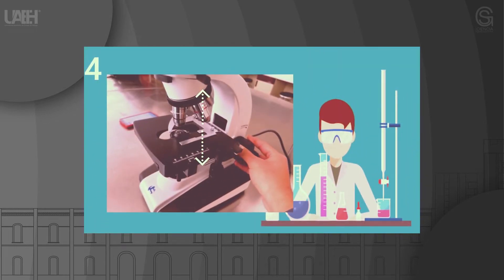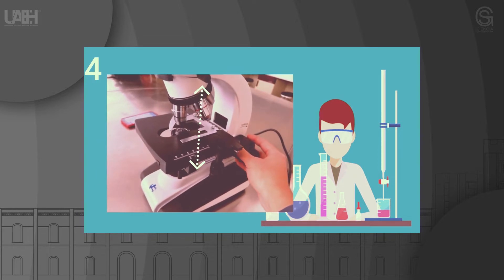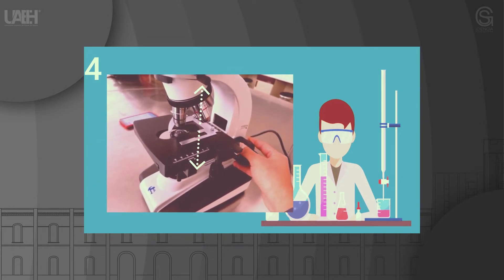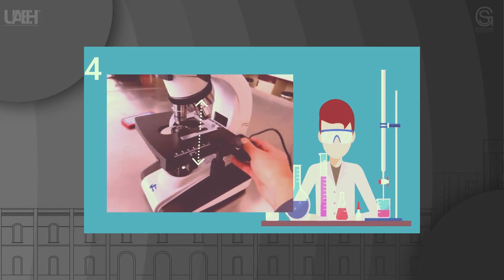Step 4: Without looking through the eyepiece yet, adjust the coarse screw to bring the stage closer to the objective. Try to get the sample as close to the target as possible but avoid touching each other, as this could damage the sample and the objective.